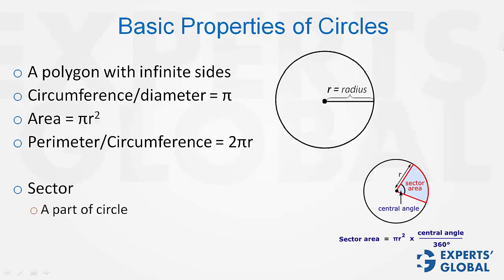Consider this a sector. Sector is a part of a circle. Area is theta upon 360 pi r square, where theta is the angle made by the sector at the center of the circle.